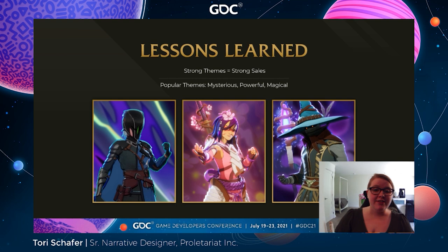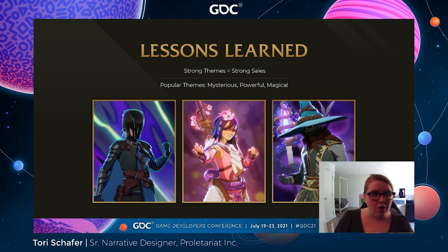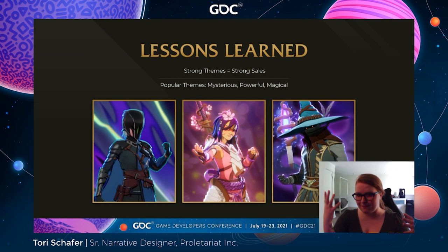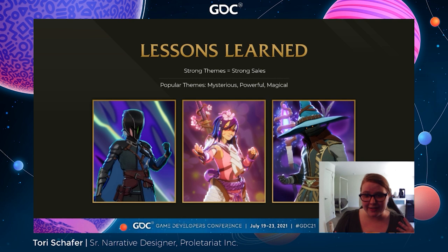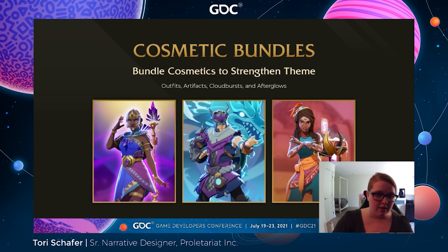So, what did we learn? This pipeline works. Starting our cosmetics pipeline with fleshed-out narratives helped create stronger cosmetics overall, which in turn leads to stronger sales. We were also able to analyze which themes resonated with players strongest and then create cosmetics with similar themes. Overall, our cosmetics collection is much stronger because of this pipeline. Some popular themes are mysterious, powerful, and magical. For example, Black Knight is very mysterious — she has a mask covering her face and blues and blacks on her outfit. Blademaster Sakura looks very powerful with samurai armor and a big katana on her back. And Wayward Sorcerer looks very magical — like your typical mysterious warlock. These all sold very well and are themes we recognize as popular and want to do more of.